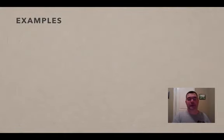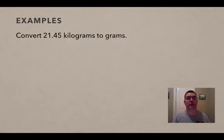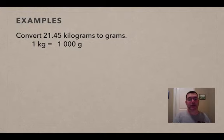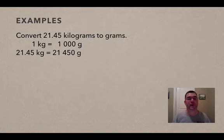Alright, so let's do a couple of examples, just to see what I'm talking about. If I wanted to convert twenty-one point four five kilograms to grams. Well I know that a kilogram is one thousand grams, so I set that equation up. And as long as I multiply both sides by the same thing, then it's still equal. So I'm going to multiply both sides by twenty-one point four five. So the twenty-one point four five kilograms is equal to twenty-one thousand four hundred and fifty grams.